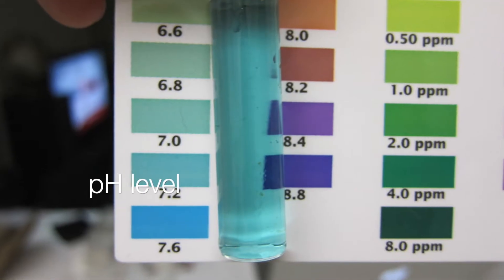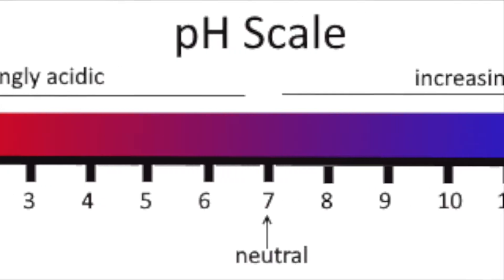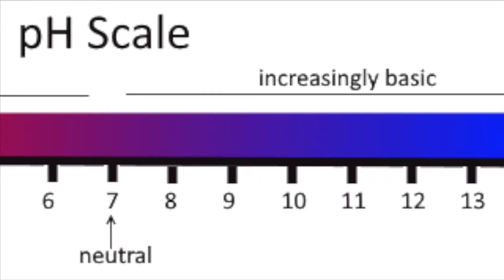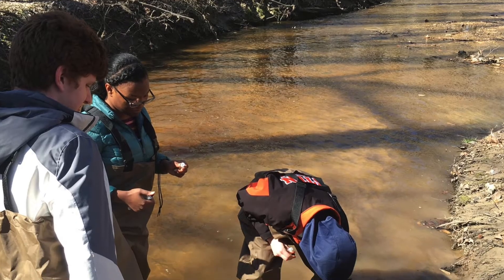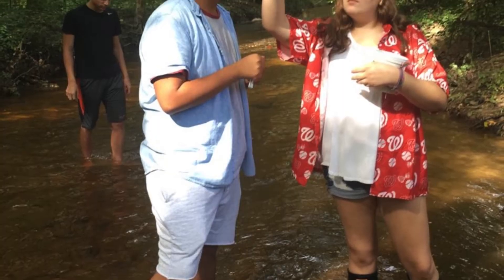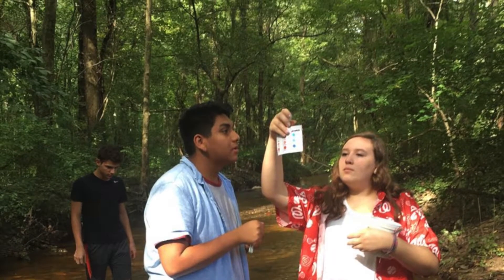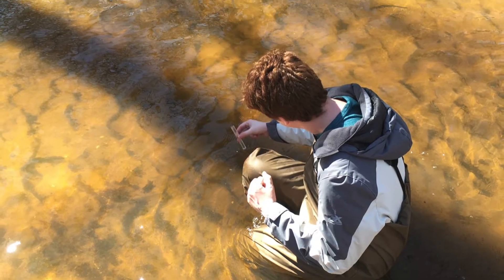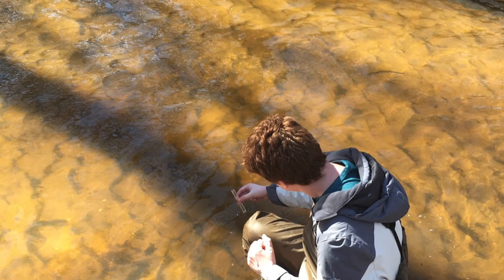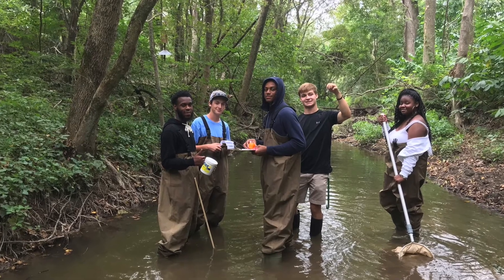Chemical tests. The pH scale ranges from 0 to 14, with lower numbers being more acidic and higher numbers more basic. Most streams have a neutral to slightly basic pH of 6.5 to 8.5. If stream water has a pH less than 5.5, it may be too acidic for fish to survive in, and a pH greater than 8.6 may be too basic.